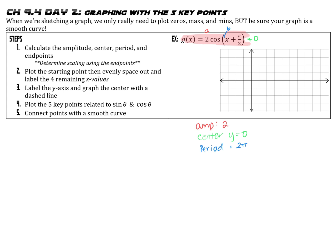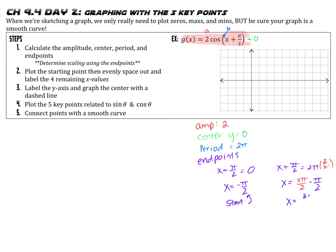Last but not least, we find the endpoints. We set the inside portion equal to 0 and equal to 2 pi, because normally cosine has a period that goes from 0 to 2 pi, and we want to see how that period is adjusted based on the transformations. Our starting point is when x equals negative pi over 2. For the endpoint, 2 pi is the same as 4 pi over 2, and subtracting pi over 2 gives us 3 pi over 2. So we start at negative pi over 2 and end at 3 pi over 2.